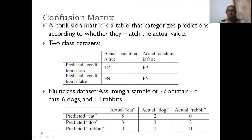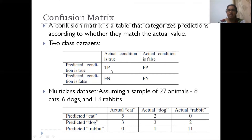A confusion matrix is a table that categorizes predictions according to whether they match the actual value. For a two-class problem, we have true positive (TP) when actual and predicted are both true, true negative (TN) when actual and predicted are both false, false positive (FP) when prediction is true but actual is false, and false negative (FN) when prediction is false but actual is true. FP and FN are both errors.